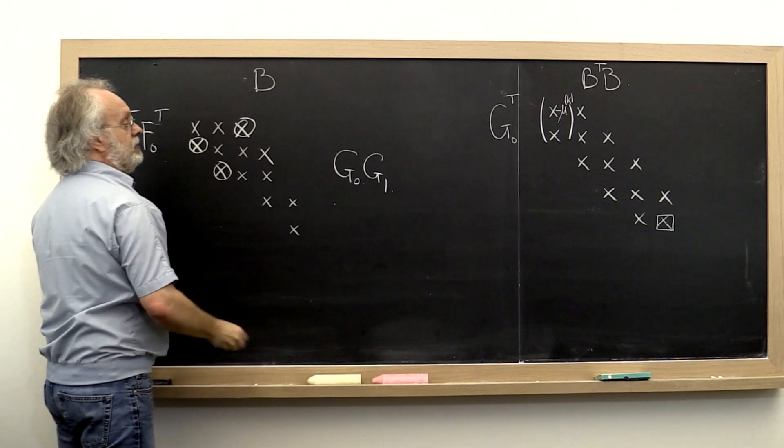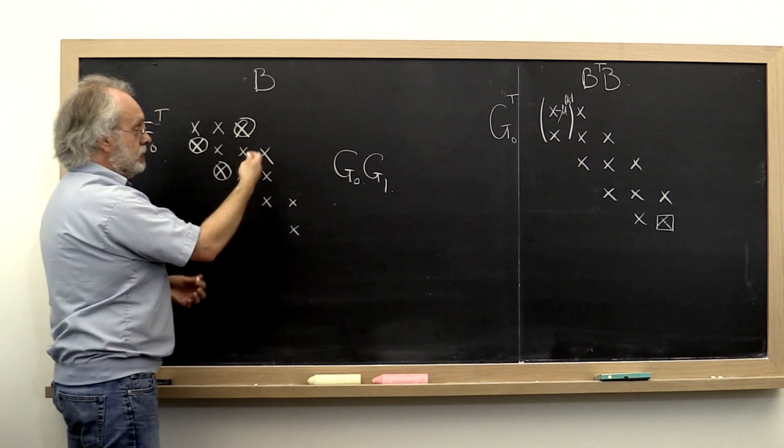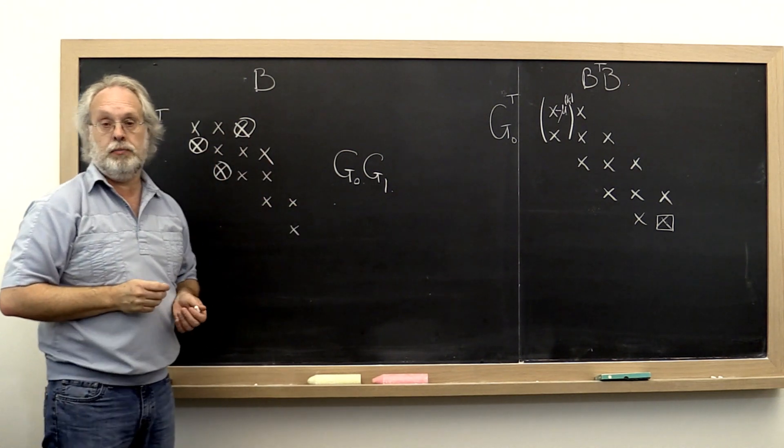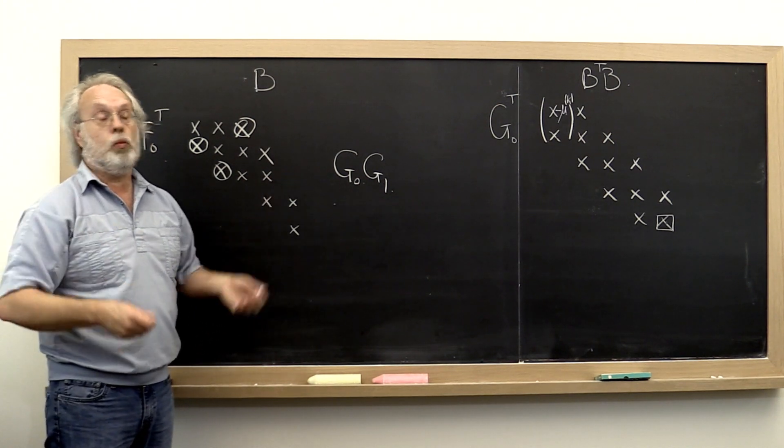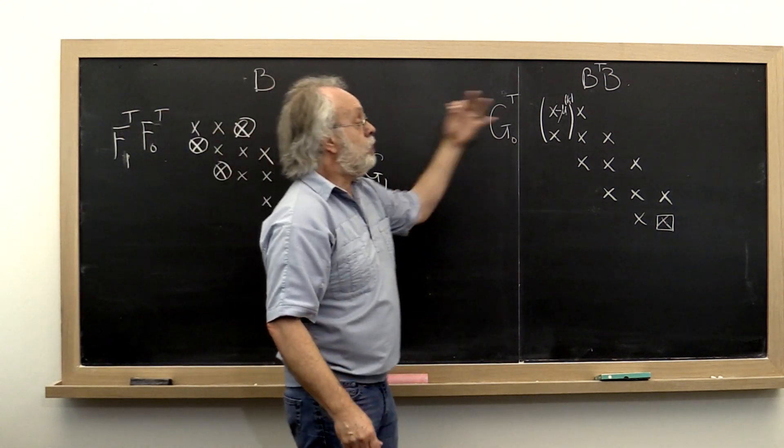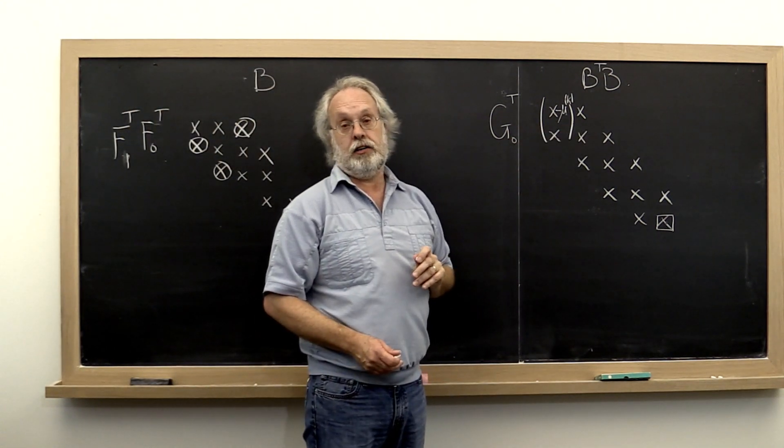Filling that one in, back and forth. Once we chase it out, we end up with a bidiagonal matrix. And we know that that implicitly is exactly what we would have gotten had we worked with the tridiagonal matrix.